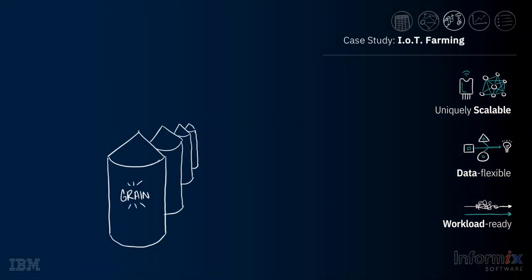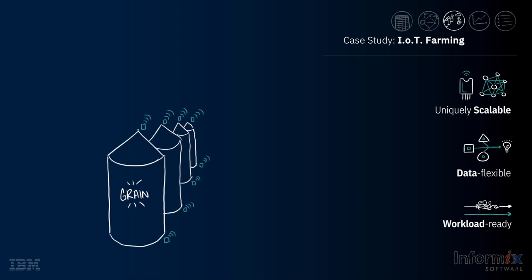As an example of how Informix can solve a seemingly simple yet complex data problem, suppose you manage a series of grain silos. The grain in these silos must be kept within certain ranges of humidity, temperature, and other metrics to prevent spoilage. To monitor these environmental conditions, probes and sensors are built into the silos. In addition, weather-related sensors are deployed to monitor environmental or other weather changes which could affect the grain in the silos.